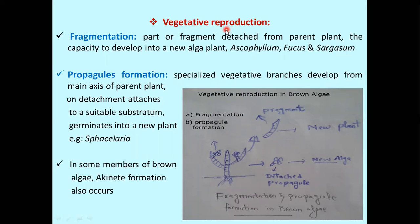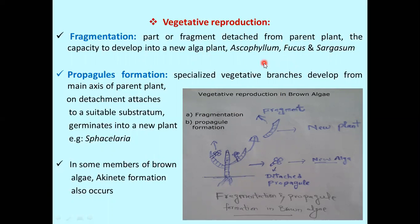Brown algae generally reproduce vegetatively by the process of fragmentation and propagule formation. In fragmentation, a part or fragment detaches from the parent plant and this fragment has the capacity to develop into a new algal plant. This type of reproduction occurs in Ascophyllum, Fucus, and Sargassum, which are examples of brown algae.